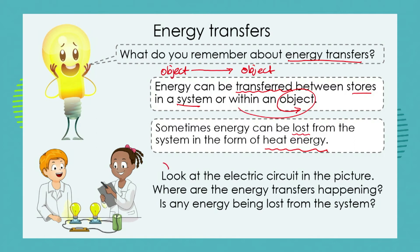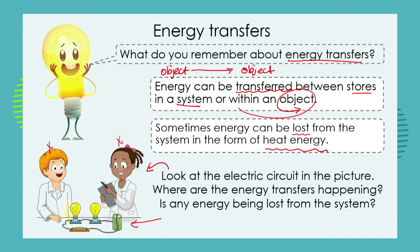For example, it could be lost in the form of heat energy. Now let's have a look at this electric circuit in the picture. I want you to focus on the electric circuit, not the two children doing the experiment. Let's think of the electric circuit as a system and follow all of the energy transfers. In the battery — we've got a little cell there — we have chemical potential energy being transferred into electrical energy.